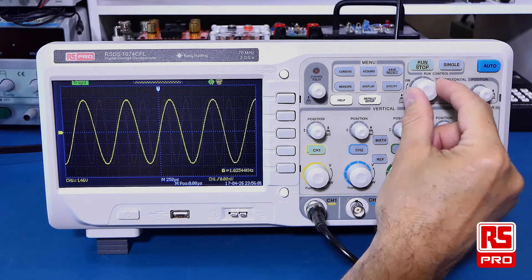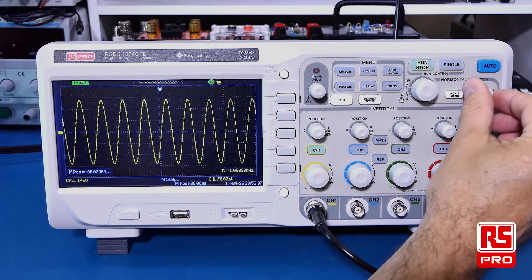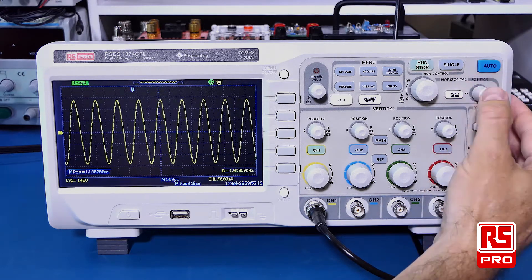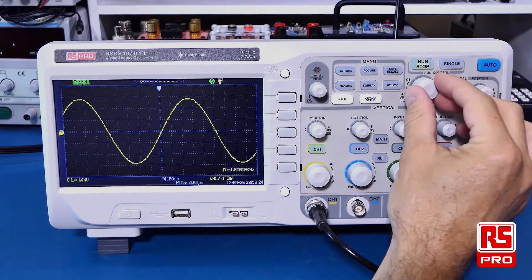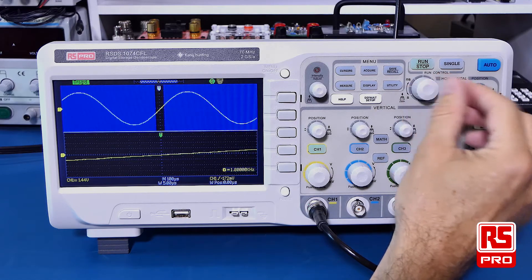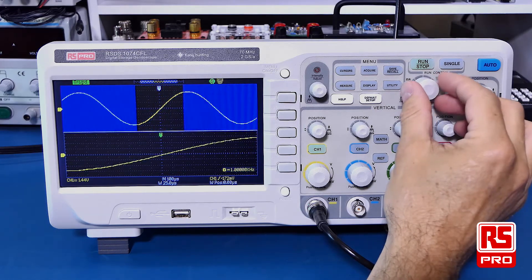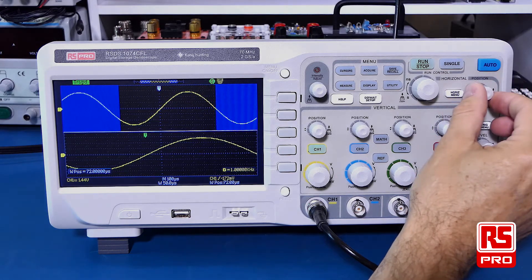The horizontal controls are easily accessible and allow you to change the time base or the time position. A single push on the position switch will reset it to zero. A simple push of the horizontal control knob will take you into the split screen zoom mode which will allow you to change the zoom or the position that you're looking at your waveform to do better analysis.